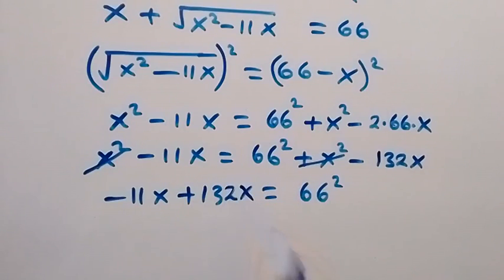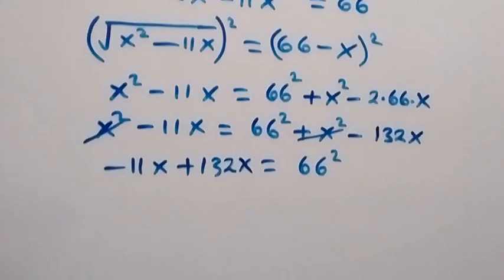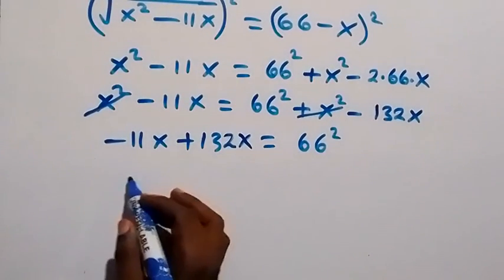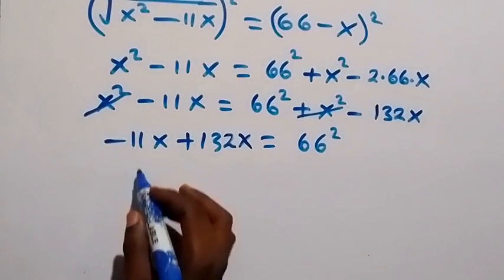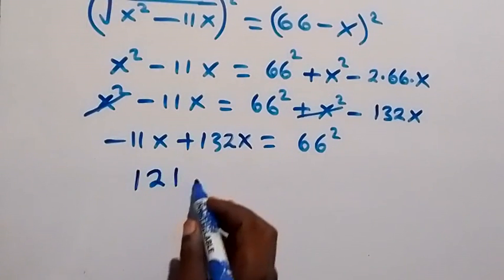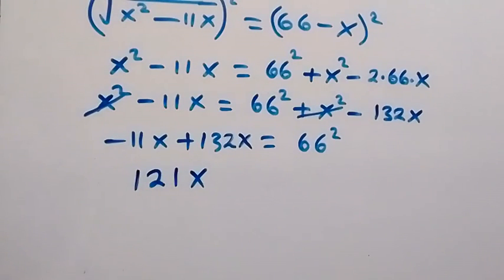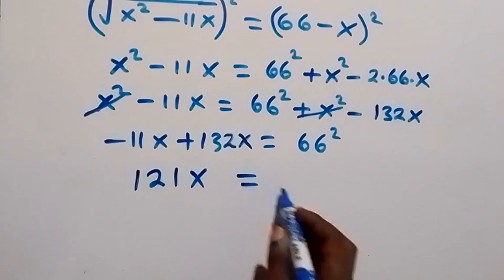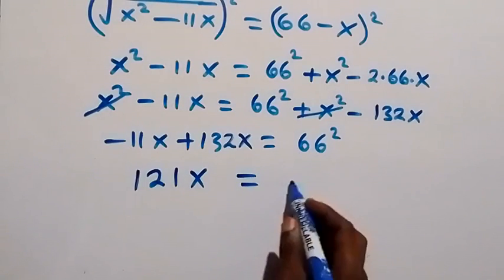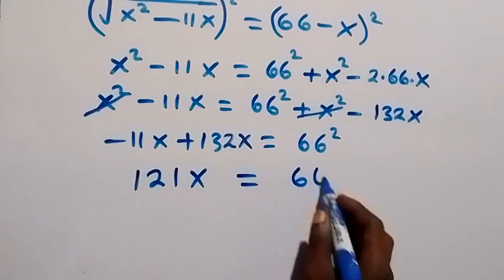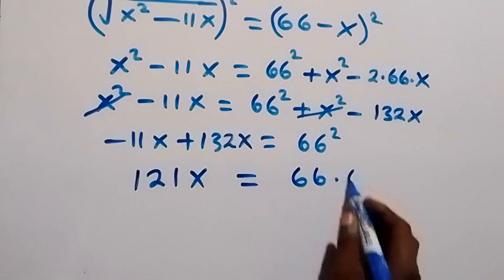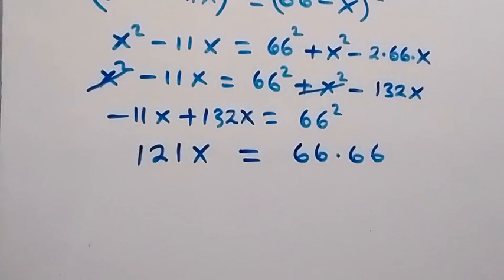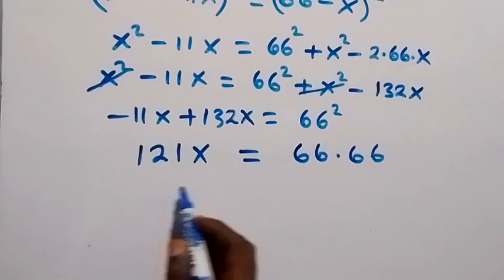Then −11x + 132x gives us 121x, and 121x equals 66 times 66. When we divide both sides by 121...